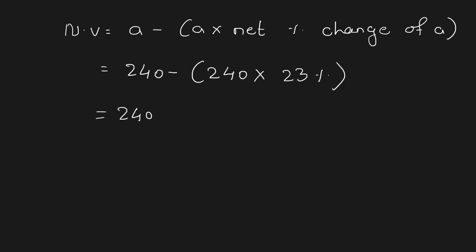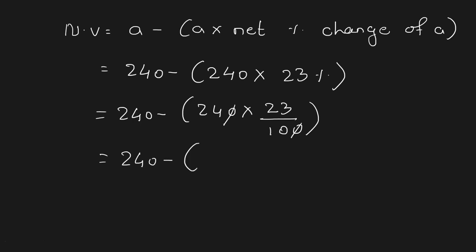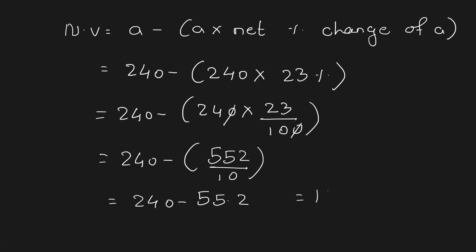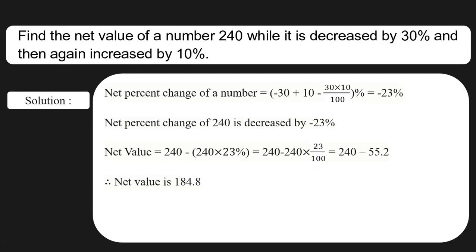That is 240 minus 240 into 23 upon 100. The zeros get cancelled: 240 minus 24 into 23 is 552 upon 10, which can be written as 240 minus 55.2. Now 240 minus 55.2 gives you the answer 184.8. So 184.8 is the net value of the given number.